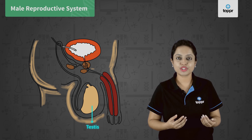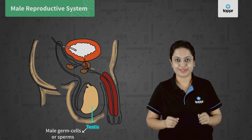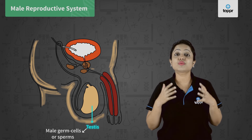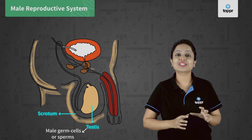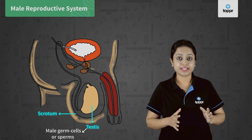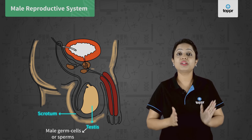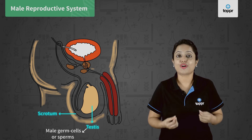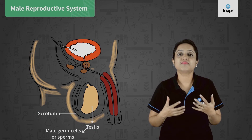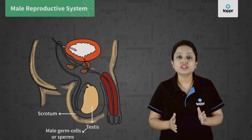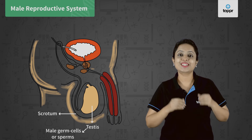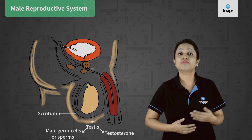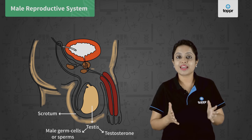The testes are responsible for the formation of male germ cells or sperms. They are located outside the human body in a sac called the scrotum sac. This sac maintains a temperature below the normal body temperature, which is required for the formation of sperms. Besides producing the male gametes, the testes play an important role in secretion of a male hormone called testosterone. Testosterone regulates the formation of sperms and brings changes in the appearance of males during puberty.